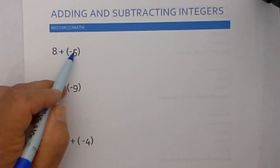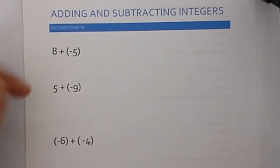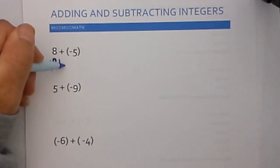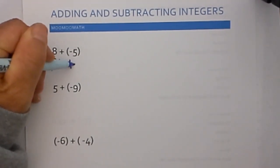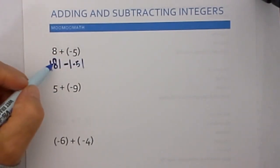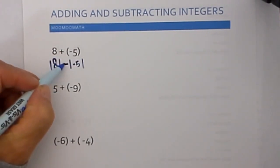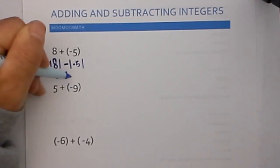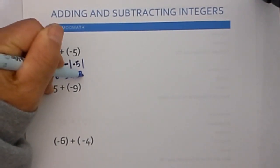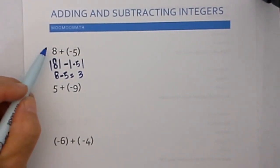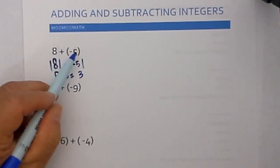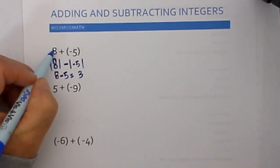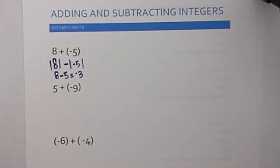You have a positive 8 and a negative 5. So what we will do is subtract the absolute value of both numbers. We have the absolute value of 8 minus the absolute value of negative 5, so that becomes 8 minus 5, which is equal to 3. Now you ask yourself, what about the sign? Take the sign of the larger number, which is 8, so it becomes negative 3.